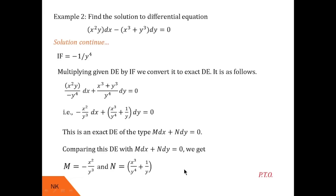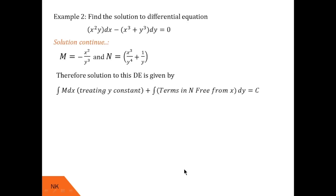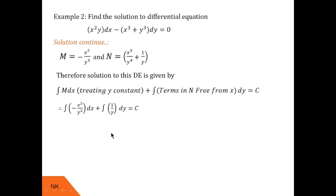We write the solution using the formula: integration of M dx treating y constant, plus integration of terms in N free from x, dy equals c. M is −x²/y³ which goes into the first integral. In N, the only term free from x is 1/y, which goes into the second integral. Treating y as constant, −1/y³ comes out, and integrating x² dx gives x³/3. So the first integration is −x³/(3y³), and integration of 1/y dy is log y. The solution is −x³/(3y³) + log y equals c.